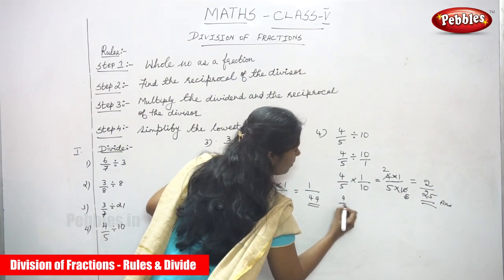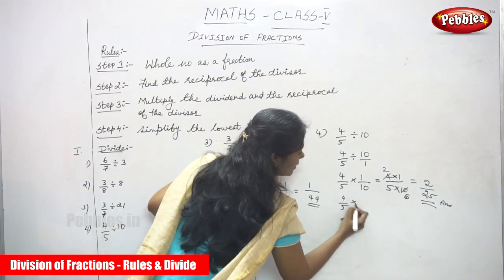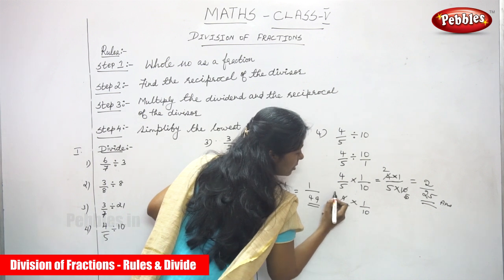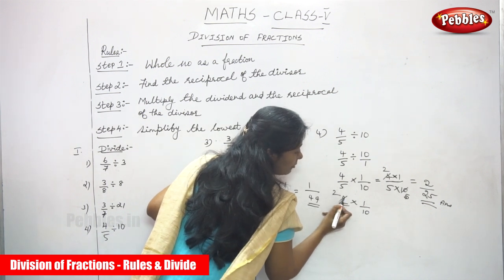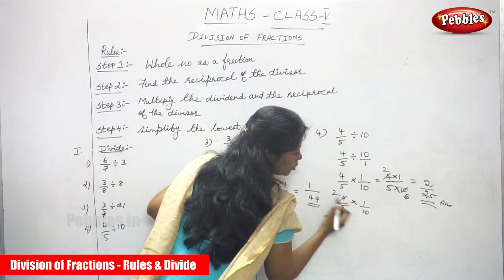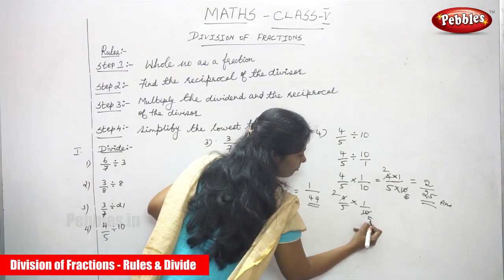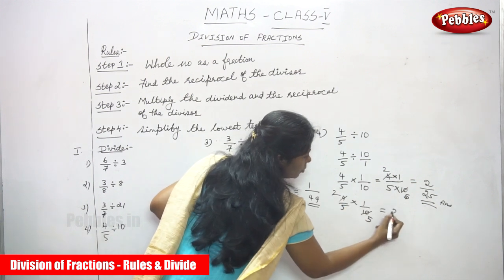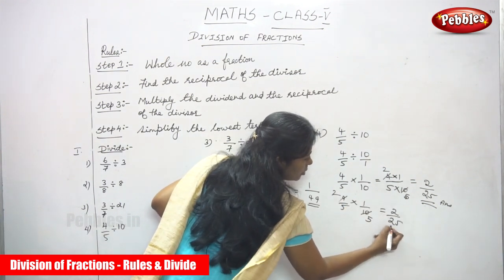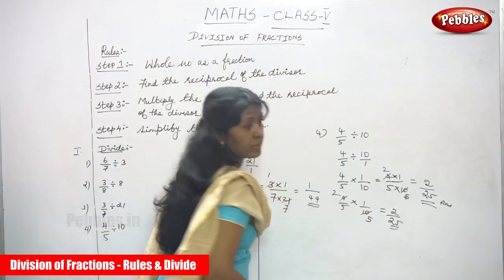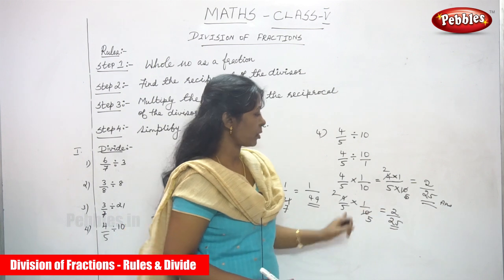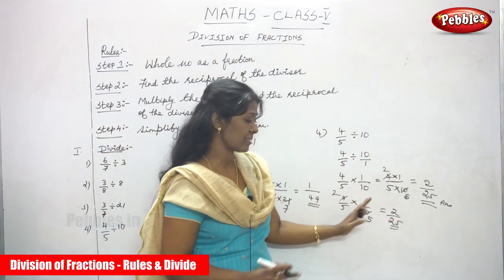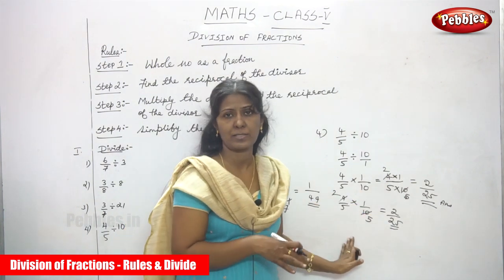You can also do it directly: 4/5 × 1/10. If you divide 4 and 10 by 2, you get 2 and 5. So 1 × 2 over 5 × 5 = 2/25. This is the same answer — you can cross-cancel directly within the combined expression.